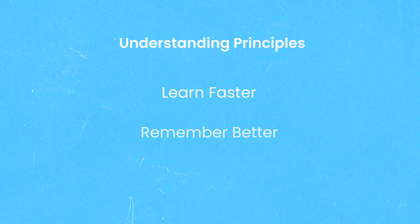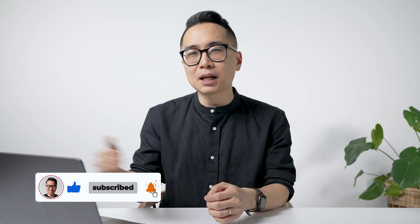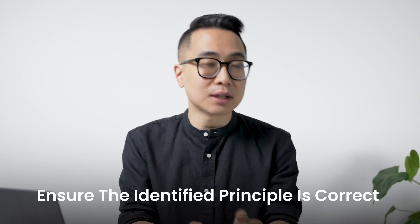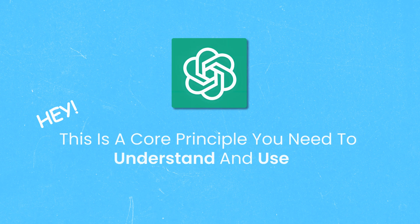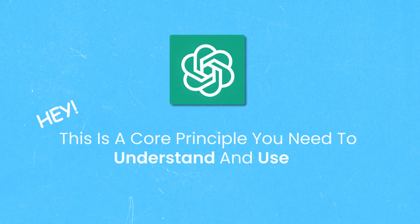Understanding principles helps you learn faster, remember things better, and score higher. AI should be a tool in your armamentarium, not the sole thing you rely on. If you're trying to find underlying principles, AI may not be the best approach. If prompted, it can do a pretty good job confirming whether the principle you've identified is correct — but oftentimes it won't go out of its way to say, 'Hey, this is a core principle you need to understand.'